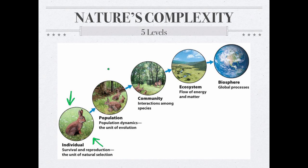Moving up to a more complex level, we get to the population level. A population is a group of animals that are the same species living in the same place at the same time. Here we've got a group of rabbits — all the same type, living in the same forest at the same time. Natural selection works on the individual, but evolution works on the population. Over time, populations change in response to their environment, predation, and things like that — and that change is called evolution.